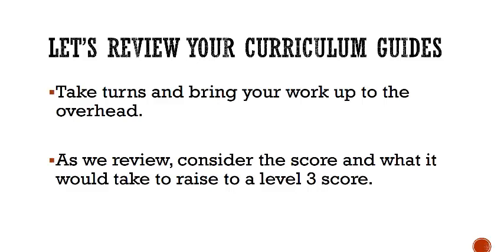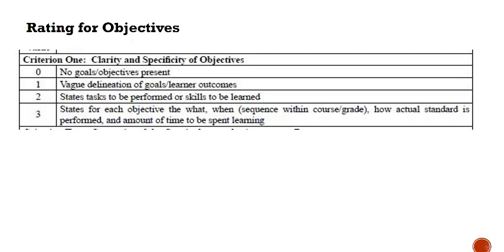I want to look at the criteria you should use for your curriculum guides. Looking at your objectives, you'll rate them zero through three. You're obviously going to have some objective in there, so it won't be a zero since I told you to divide it into units and put an objective in each one. Really we're looking at ones and twos. Be cognizant of what it takes to get to a rating of two and possibly three. A three for each objective means the what, when, and how — the actual standard as performed and the amount of time spent learning it.